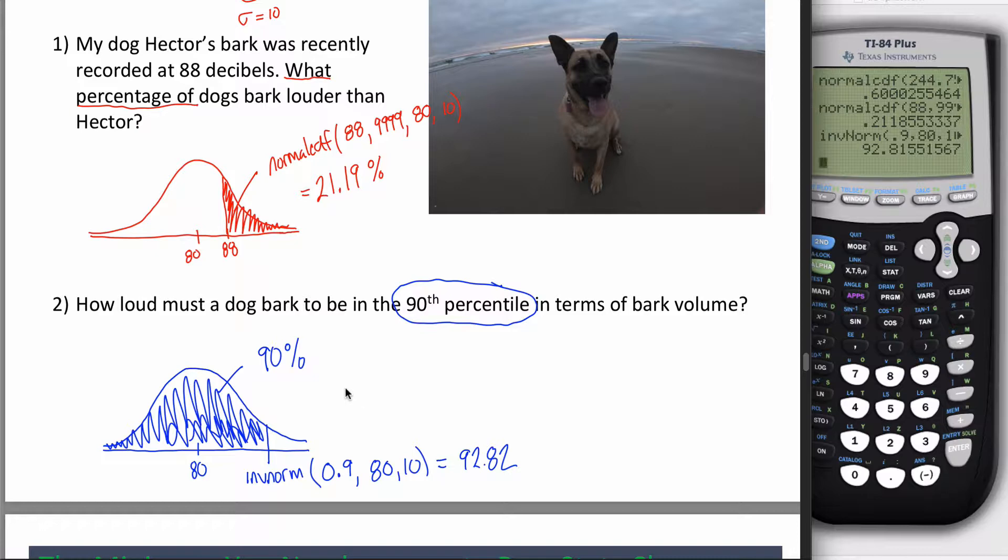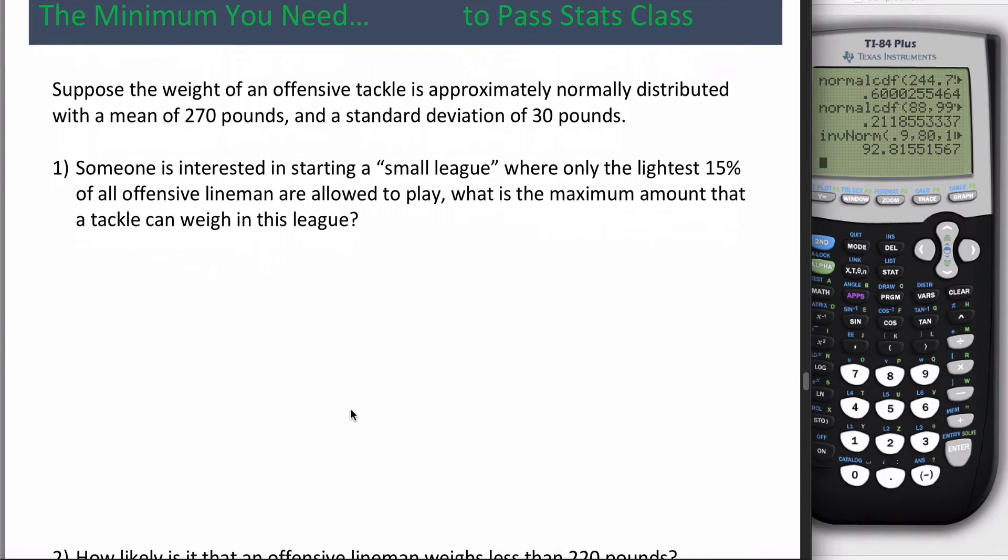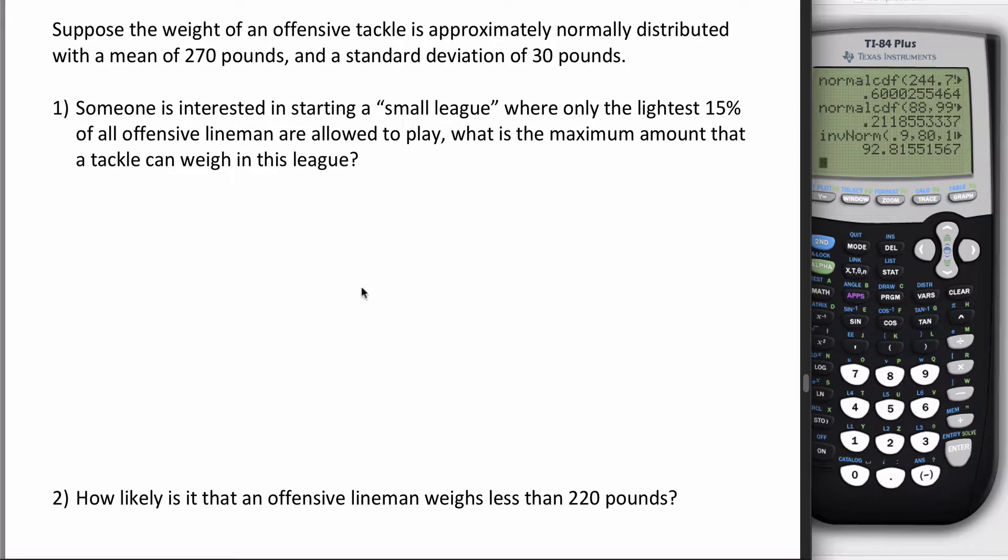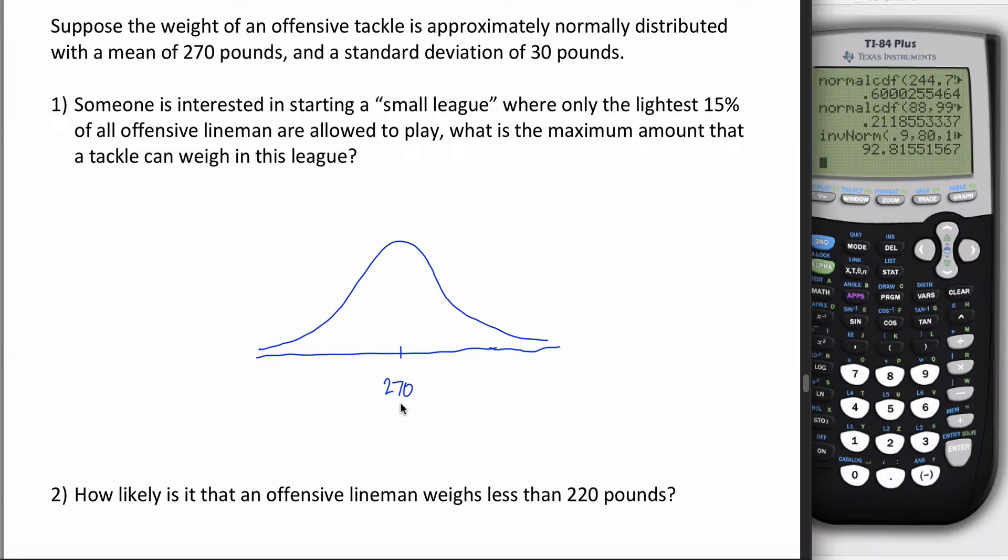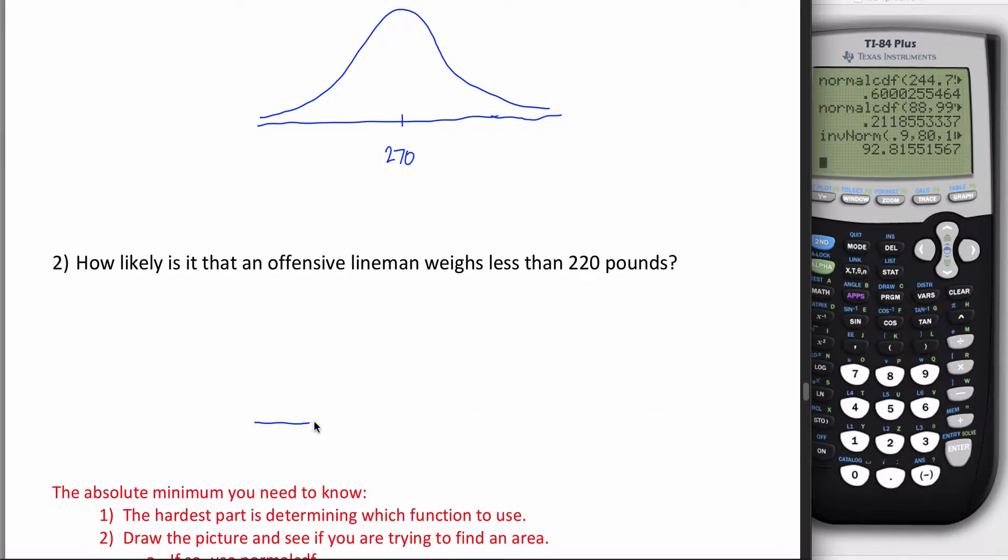In case you're not sure about that, I'm going to show you two more questions. And guess what? One is going to be normalCDF and one is inverse norm. Can you look at these two and tell which is which? We're going back to offensive tackles and their weight. They weigh on average 270 pounds with standard deviation 30 pounds, and their weight's approximately normal. I'll draw the same picture for both of these.